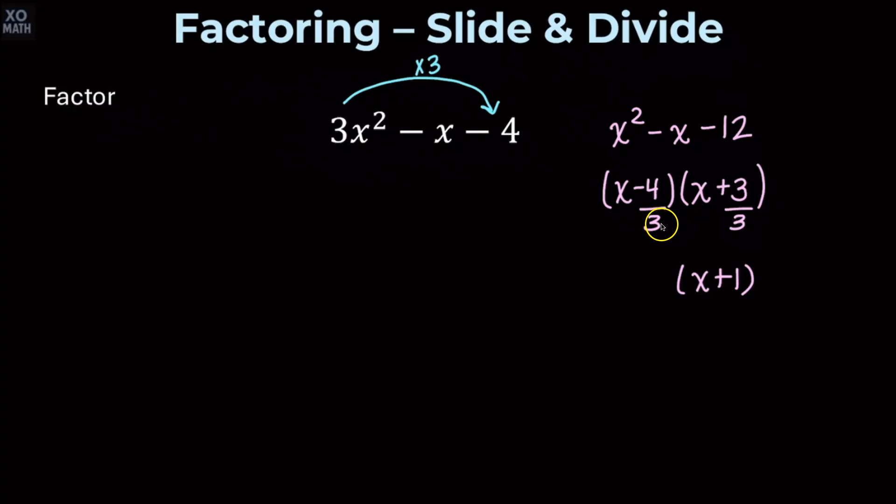4 thirds does not reduce. So what we're going to do is take that denominator 3 and actually slide it back in front of the x. So we're going to have 3x minus 4. That is the factorization for the original quadratic: quantity 3x minus 4 times the quantity x plus 1.